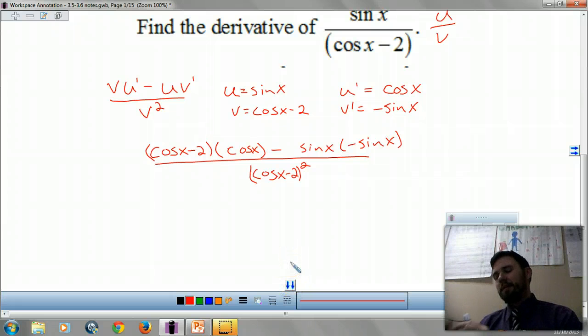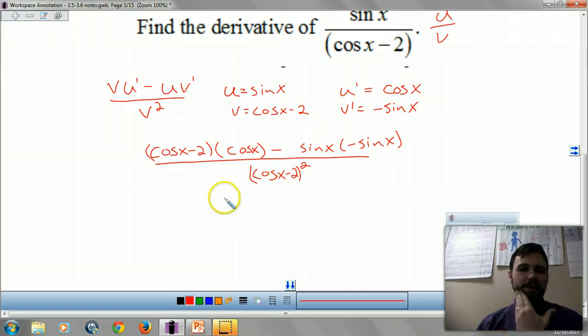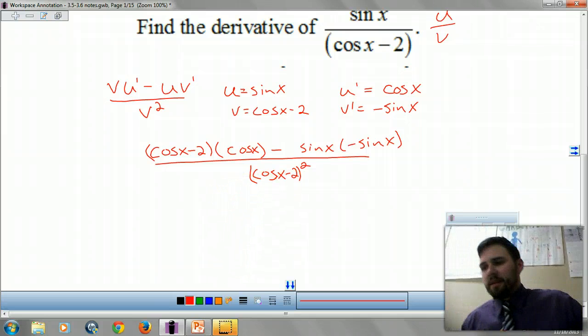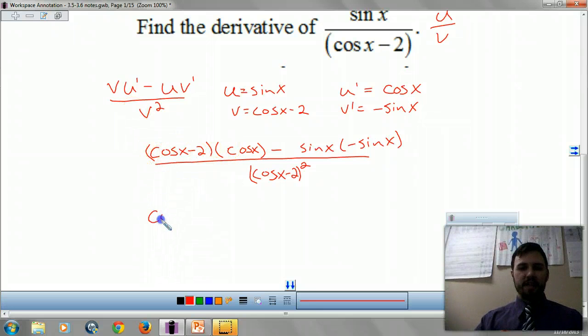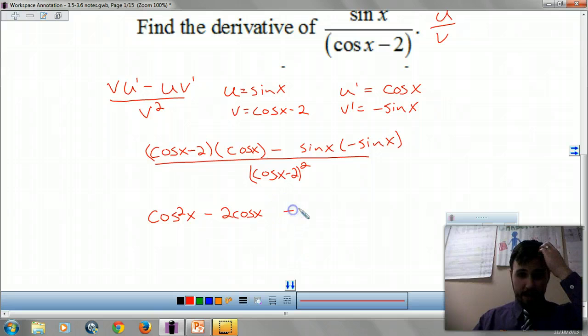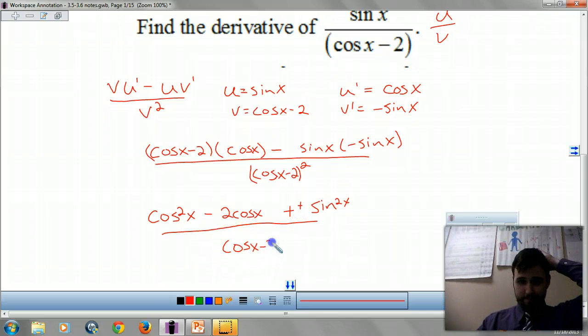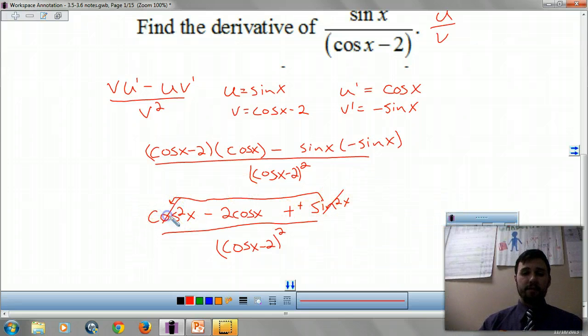Now, usually I don't combine like terms, but this time I'm going to because they're pretty nice. Not like terms, but foil it out. So here we get cosine squared of X minus 2 cosine, all this minus negative sine squared of X, which is a plus all over the bottom squared. What's cosine squared plus sine squared? Everybody at once. The Pythagorean theorem, that's just one, guys. So really, you get 1 minus 2 cosine of X all over cosine of X minus 2 squared.